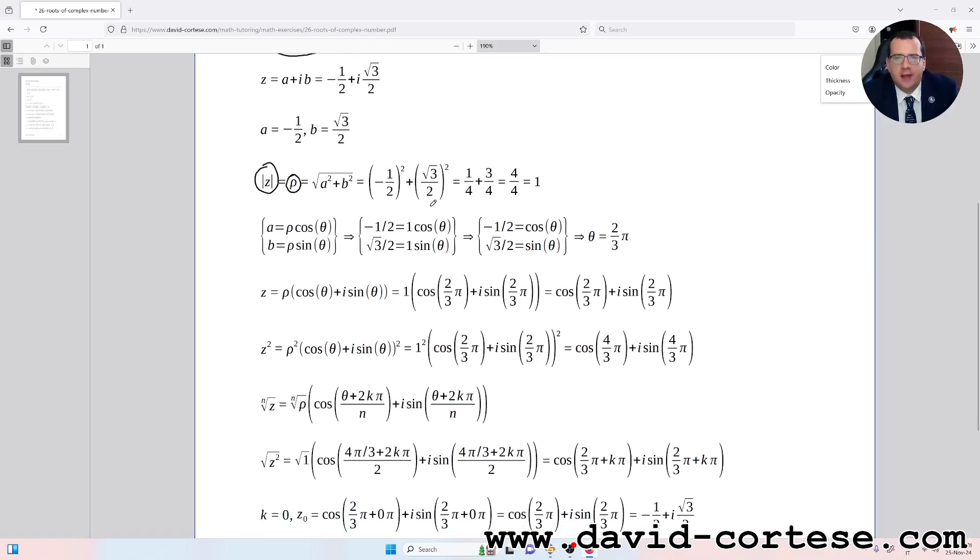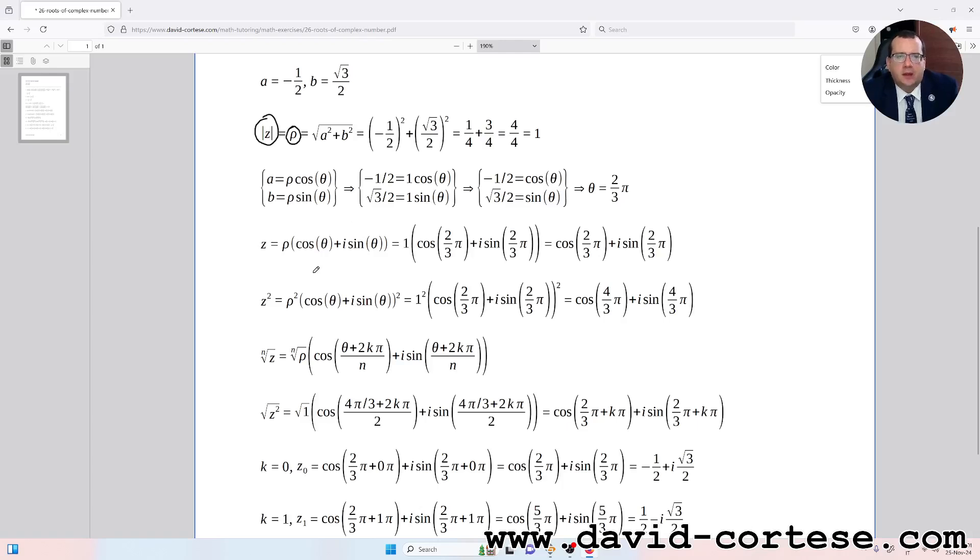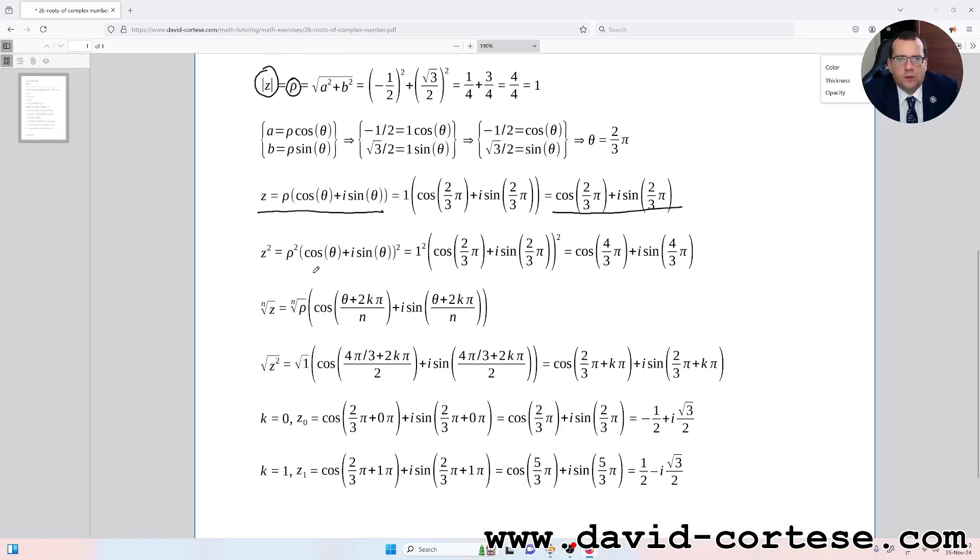Because this is the angle that has as the cosine -1/2 and as sine √3/2. So we can write this complex number in the trigonometric form using this important formula: the complex number z equals ρ times (cos θ + i sin θ). So we can write that z is cos(2π/3) + i sin(2π/3). So if we raise to the power of two...